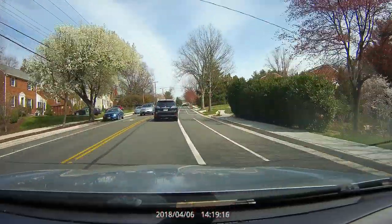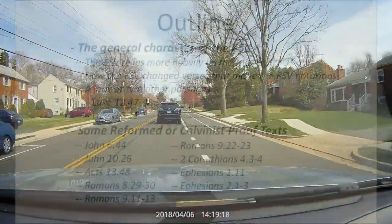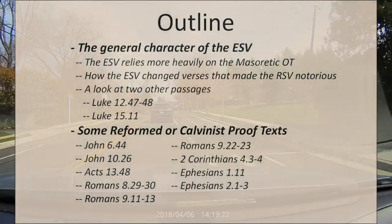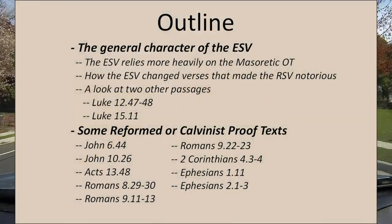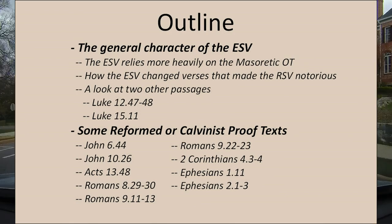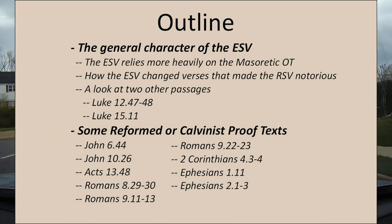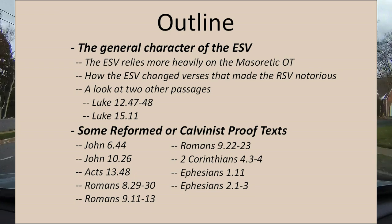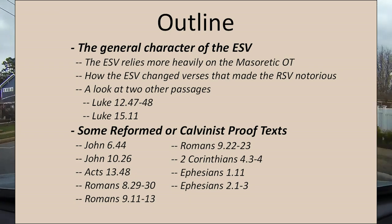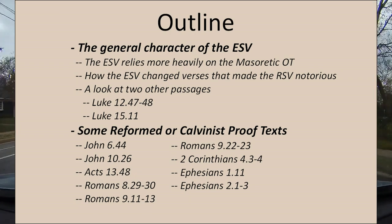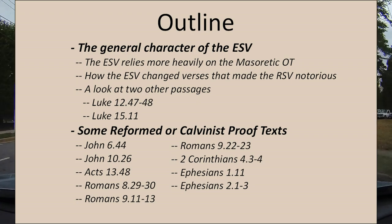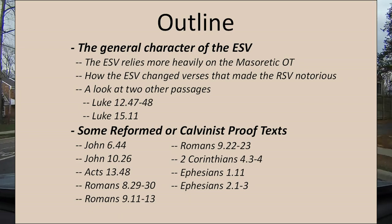Here's my outline. We'll talk about the general character of the English Standard Version, and then I'll focus in on the thesis by looking at several Calvinistic proof texts and comparing the Revised Standard Version translation with the English Standard Version. We'll look at how the English Standard Version modified those Revised Standard Version texts, and then see if there's any evidence of modifications to support peculiar Reformed views.